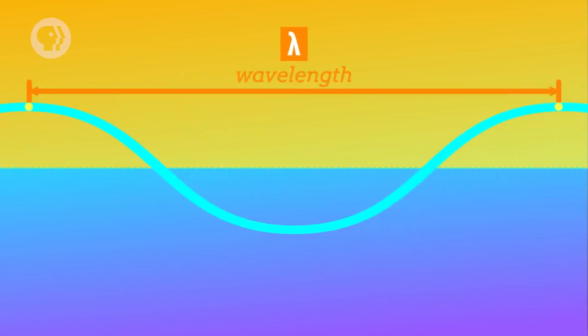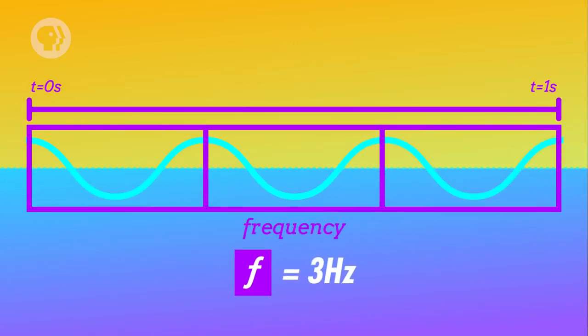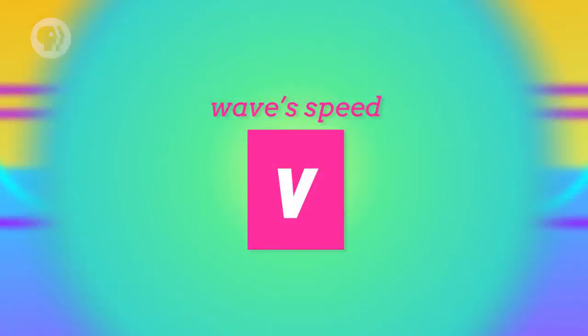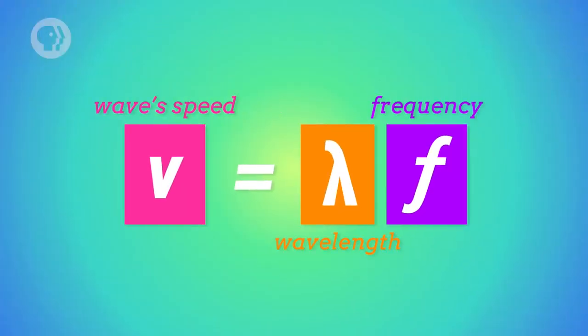They also have a wavelength, which is the distance between crests – a full cycle of the wave – and a frequency, which is how many of those cycles pass through a given point every second. Multiply the wavelength by the frequency and you get the wave's speed – how fast it's going. And the wave's speed only depends on the medium it's traveling through.